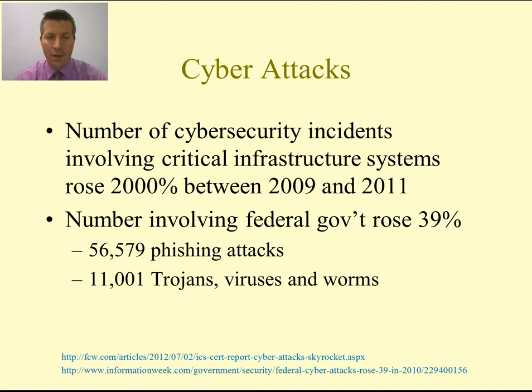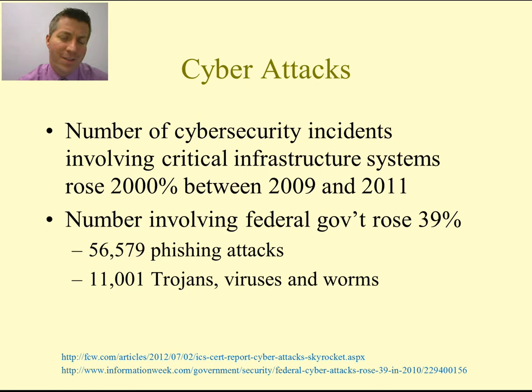Starting with cyber attacks — to give you a little foundation, the number of cyber security incidents involving critical infrastructure systems rose 2,000% between 2009 and 2011. The number involving the federal government rose by 39%. You can see just the sheer numbers: over 56,000 phishing attacks. Many of us get them on a daily basis even with spam filters and email servers that have phishing filters installed — some still come through.